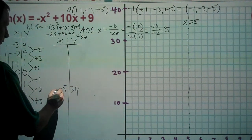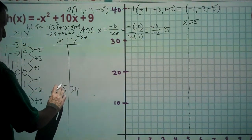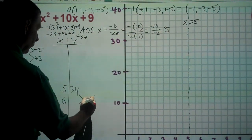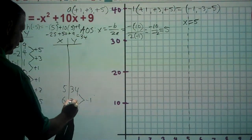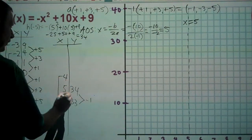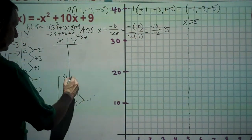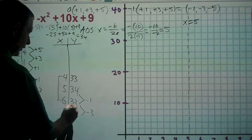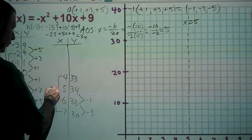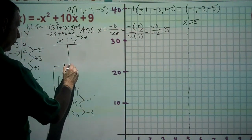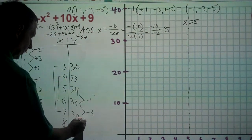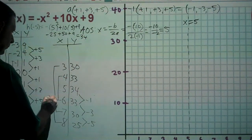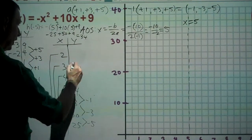Input six gives 34 minus 1 = 33; input four also gives 33. Input seven gives 33 minus 3 = 30; input three also gives 30. Input eight gives 30 minus 5 = 25; input two also gives 25.